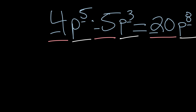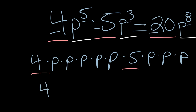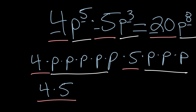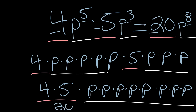Want to see why that works? Let's expand it. 4p to the 5th can be written as 4 times p times p times p times p times p — that's five p's. The second term is 5 times p times p times p — three p's. Group the numbers: 4 times 5 at the front, then count all the p's: five plus three gives eight p's total. Simplify: 4 times 5 is 20, and eight p's written with an exponent is p to the 8th. That's the beauty of exponents — we write that as 20p to the 8th, which matches what we got before.